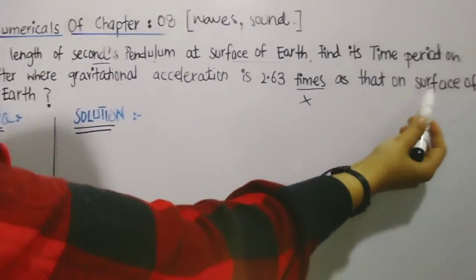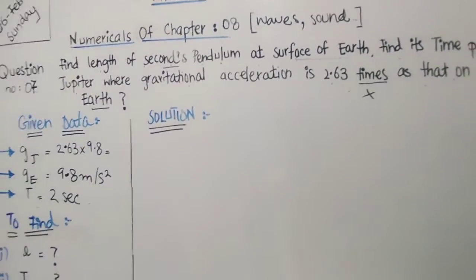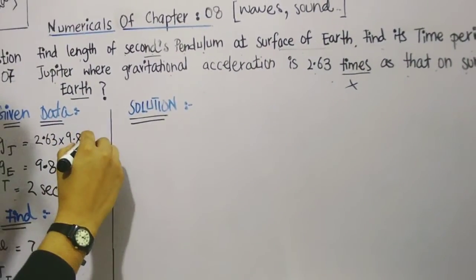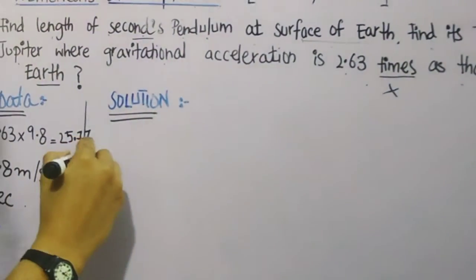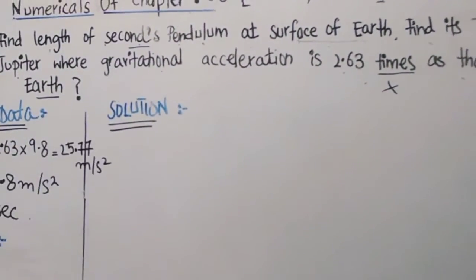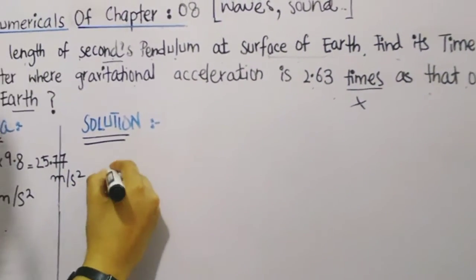So we're going to simply write that gravity J equals gravity in Jupiter is 2.63 times that on surface of Earth. So we are aware that on surface of Earth is 9.8, so we're going to multiply it and we get the answer 25.77 meters per second squared. These are all the information that we got from reading the question.